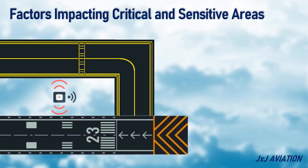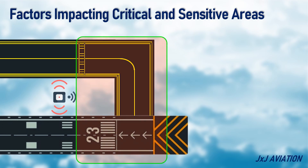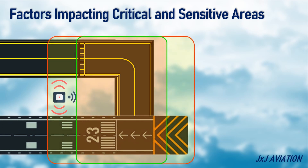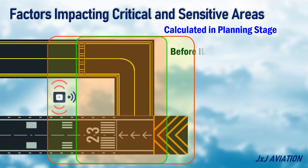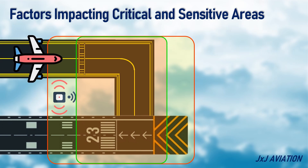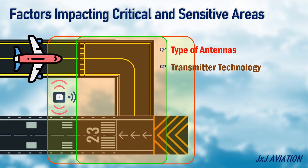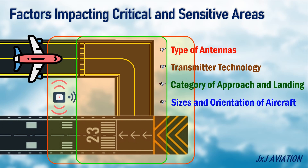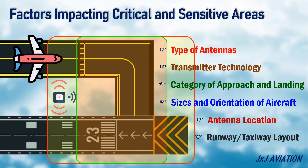Factors impacting critical and sensitive areas. The ILS critical areas and the ILS sensitive areas are calculated in the planning stage before the ILS antennas are installed. The size of these areas depends on: the type of antennas, the transmitter technology, category of the approach and landing, sizes and orientation of aircraft, antenna location, and the runway or taxiway layout.